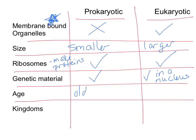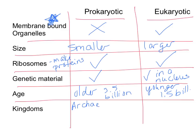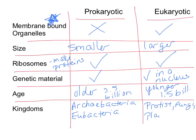Prokaryotic cells developed first — about three and a half billion years ago. Eukaryotic cells are slightly younger, forming about 1.5 billion years ago. The kingdoms containing prokaryotic cells are bacteria only: we have two kinds, the archaea bacteria and the eubacteria. Eukaryotic cells are in the rest — protists, the fungus kingdom, as well as plants and animals. So those are the two basic types of cells: prokaryotic versus eukaryotic.